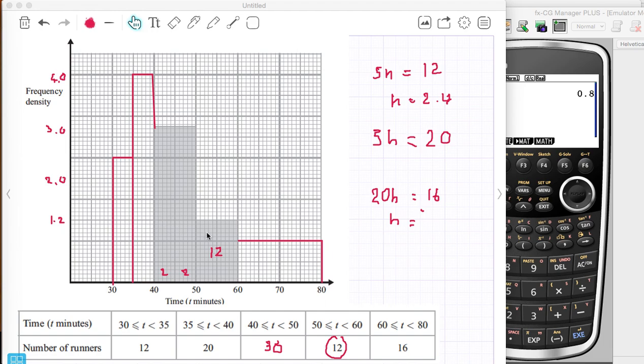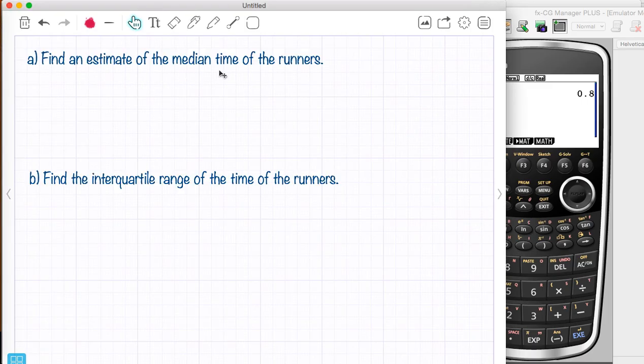In this video I drew this histogram out and worked out the frequency here. Now I want to look at two questions. I want to find an estimate of the median time of the runners and the interquartile range of the time of the runners.